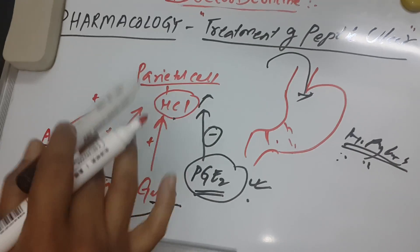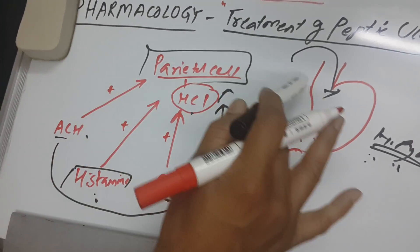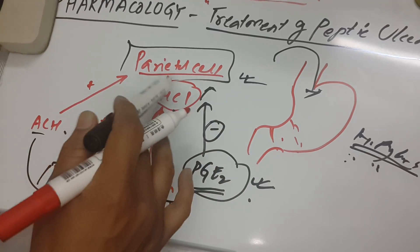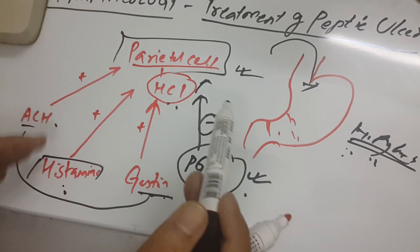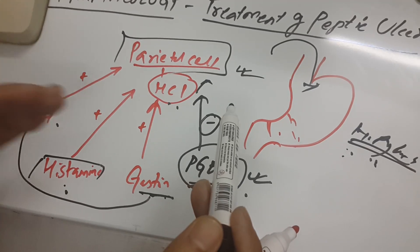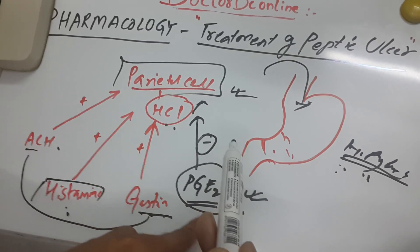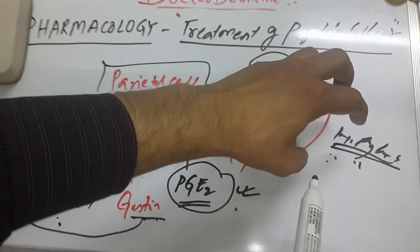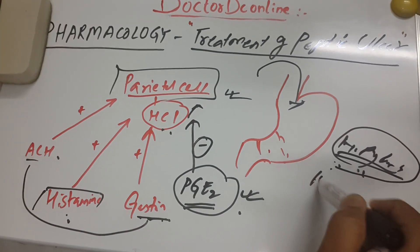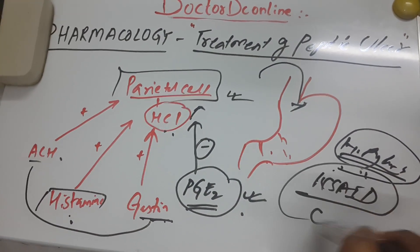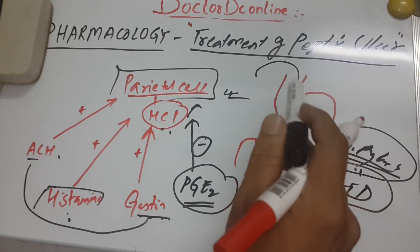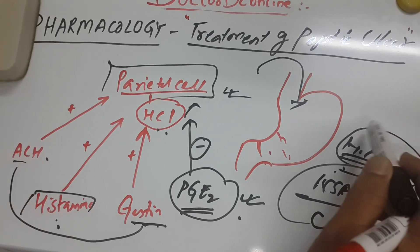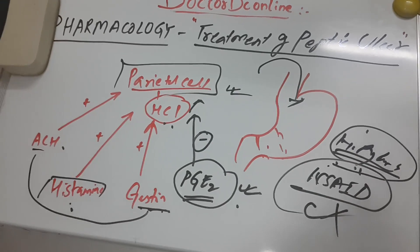Since HCl is increasing, we can give antacids to decrease the acid level. The parietal cell is the main focus — it secretes HCl, stimulated by three components: parasympathetic, histamine, and gastrin, and decreased by prostaglandin PGE2. H. pylori and NSAIDs are etiological factors. Patients suffering from peptic ulcer should not be given NSAIDs, as they may exacerbate ulcers. For H. pylori, we give antibiotics.